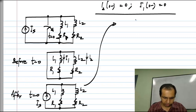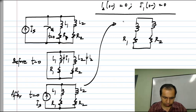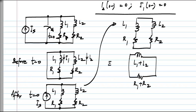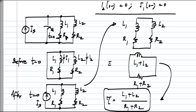To find the order of the circuit, take the source-free circuit with the current source open-circuited. We have a single loop R1, R2, L1, L2. The two inductors are in series and the two resistors are in series, giving a single inductor of L1 + L2 and a single resistor of R1 + R2. This is a first-order circuit with time constant tau = (L1 + L2) / (R1 + R2). We will now verify this formally by writing the differential equation.